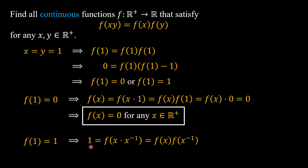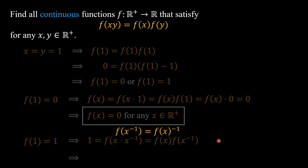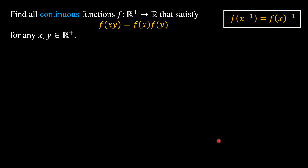In the case f(1) = 1, we have 1 = f(x · (1/x)) = f(x)·f(1/x), which gives us f(1/x) = 1/f(x) for any positive real number x. Let's keep this result in mind.